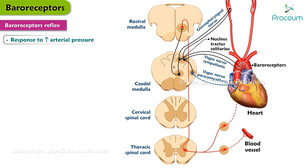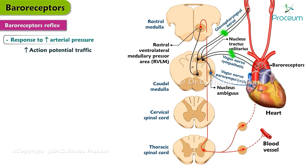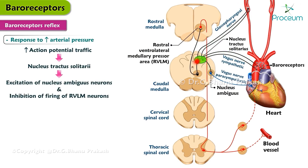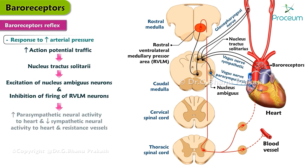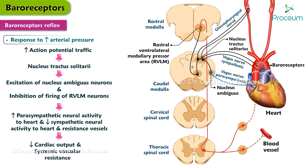The central terminals for these receptors are located in the nucleus tractus solitarii or NTS in the medulla oblongata. Neurons from the NTS project to the RVLM and nucleus ambiguus, where they influence the firing of sympathetic and parasympathetic nerves. Increased action potential traffic reaching the NTS leads to excitation of nucleus ambiguus neurons and inhibition of firing of rostral ventrolateral medulla or RVLM neurons. This results in increased parasympathetic neural activity to the heart and decreased sympathetic neural activity to the heart and resistance vessels, primarily the arterioles.